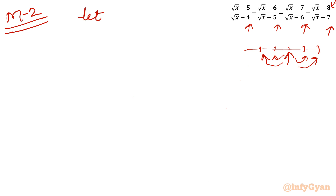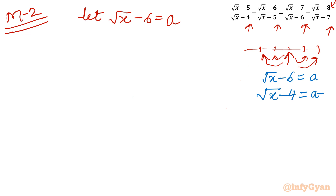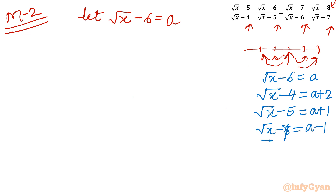Let us set √x − 6 = a. Then √x − 4 = a + 2, √x − 5 = a + 1, √x − 6 = a, √x − 7 = a − 1, and √x − 8 = a − 2. Now applying the substitution: (a + 1) over (a + 2) minus a over (a + 1) on the left hand side.